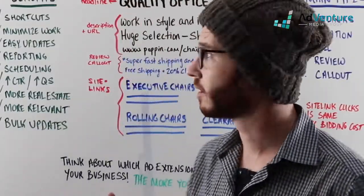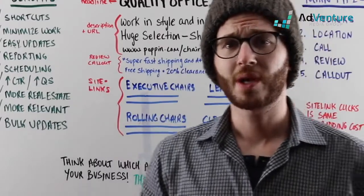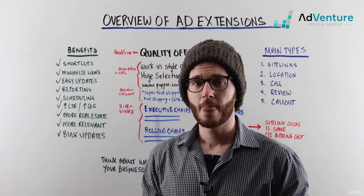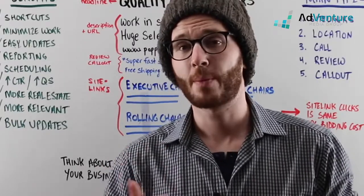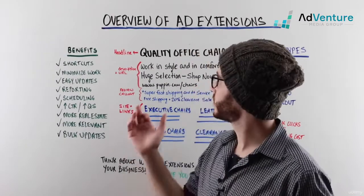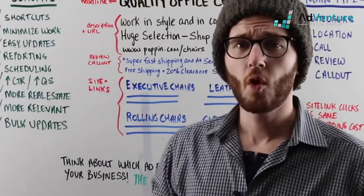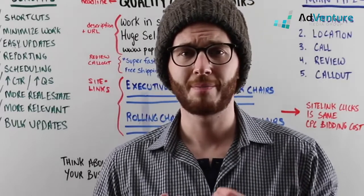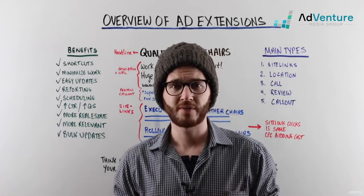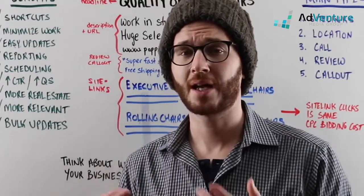Sitelink extensions in particular provide shortcuts — they allow the user to find the information they're looking for in the most specific way possible. For example, if we're showing an ad and bidding on the keyword 'quality office chairs for sale,' that person didn't express exactly what type of office chair they're looking for. People have preferences, a price range, they kind of know what they want. So sitelink extensions allow us to cater contextually to a person's needs in a more specific way, giving them a one-click option to find the exact answer to their question.